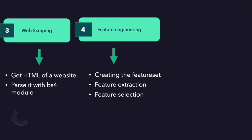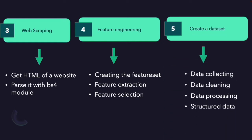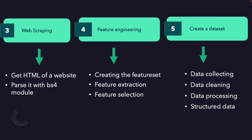Then we will start the feature engineering section. We will create new features for our models, and I will show examples for feature extraction and feature selection. As I said before, data is critical for machine learning. I will not use a prepared and structured dataset — I will show how to collect data, clean it, and process it, so that at the end we will be ready to start machine learning experiments with our structured data.